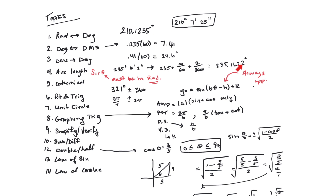Look at your answer choices on a multiple choice test to determine how far to round. Number four is arc length. Use the formula s = rθ, but remember that theta must be in radians. For example, with a circle of radius 10 and an angle of 30 degrees, using 10 times 30 = 300 would be wrong. You should use pi over 6 times 10, which gives 10π/6 or 5π/3. Always convert to radians first.